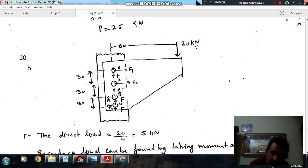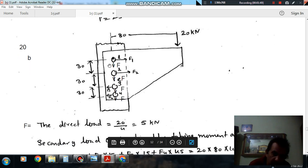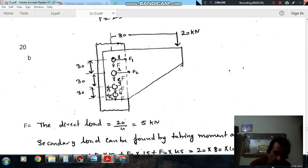So as this load is your eccentric load, this will cause two types of load on the rivet: one is direct load, another is secondary load. So direct load is equally distributed among these rivets. As there are four number of rivets, direct load on each rivet is 20 by 4, that is 5 kN. So F will be equal to 5 kN and it will act in downward direction because 20 kN is in downward direction and this F is due to this load.